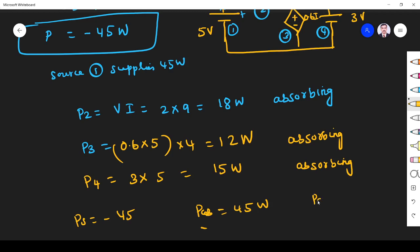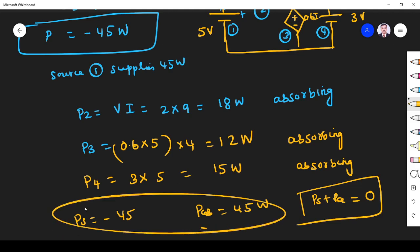So supplied power is equal to absorbing power. So net power is PS plus PA. Supplied power plus absorbing power is 0, because PS is equal to PAB. So our answer is correct.